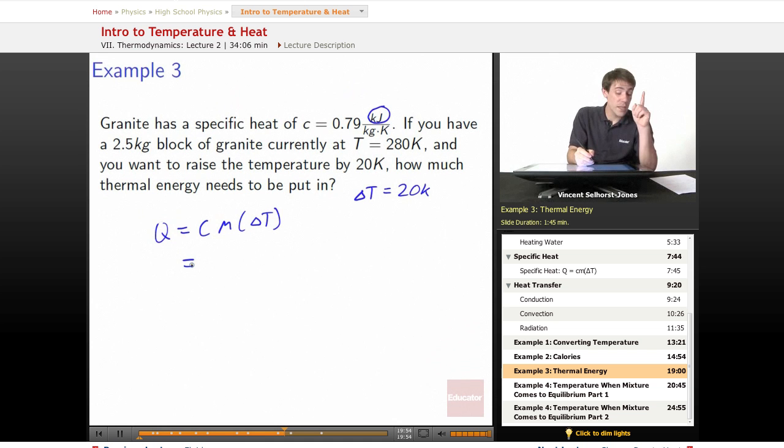We plug everything in at 0.79 kilojoules. So if we want to do this in joules, what we're used to doing, we'll convert with 0.79 times 10 to the third, right, so it's joules per kilogram per Kelvin.